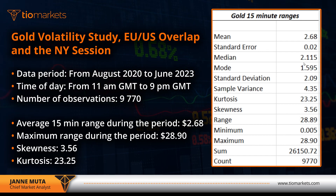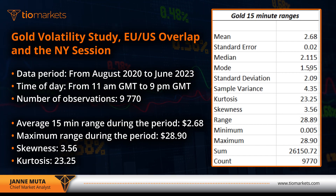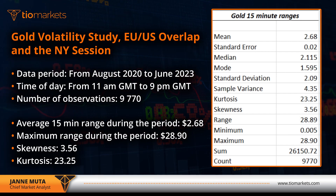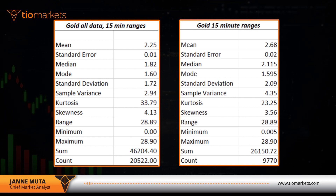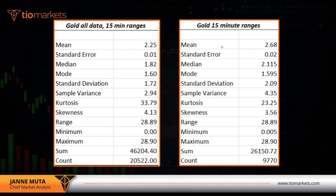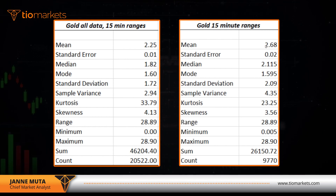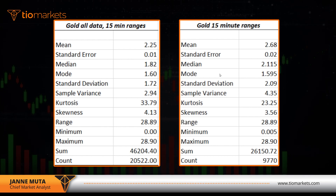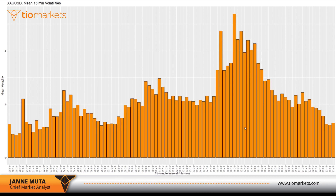The most frequent ranges are roughly the same size in both datasets. Comparing mean values: across all data the average is $2.25, and in the European-US overlap and New York session window the average is $2.68. The mode values are practically the same. Looking at the chart of average 15-minute volatilities for Gold — with dollars on the y-axis and 15-minute timestamps on the x-axis — we can clearly see that it's the New York session that has the most volatility.